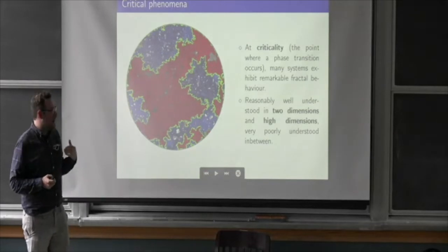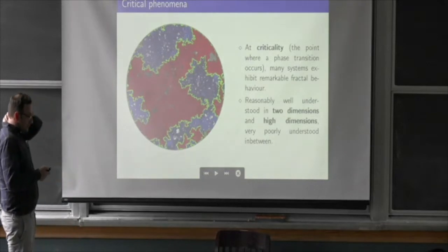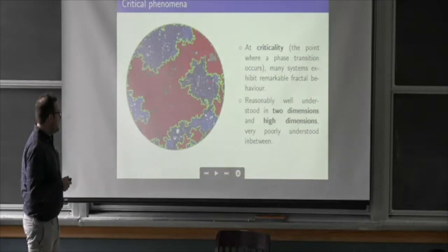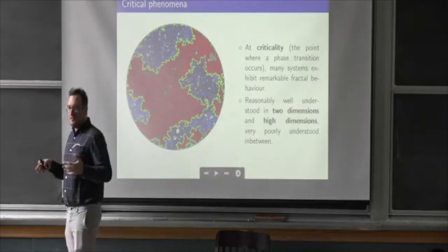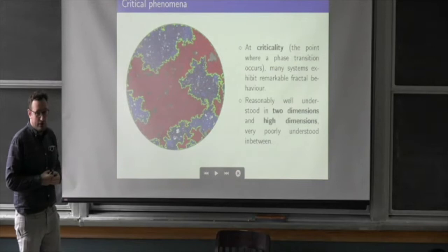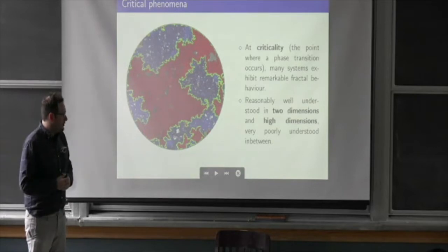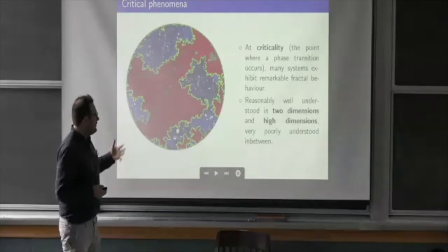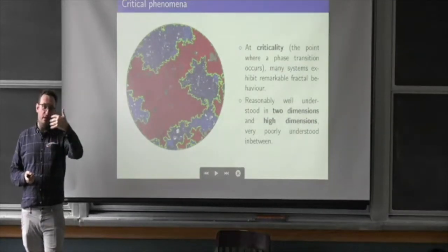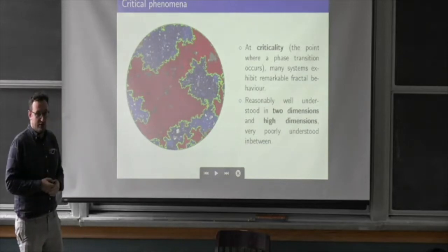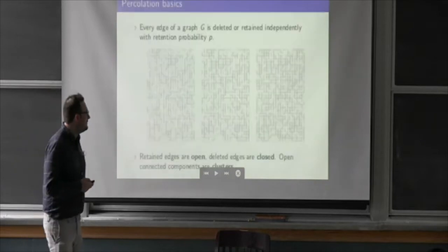One example I'll talk about in detail today is percolation. This is actually a simulation of percolation done by Jason Miller. You can see this critical percolation with all these interesting fractal boundaries between different large clusters. Generally, we understand critical phenomena pretty well in two dimensions — or more accurately, there are a small number of models we understand extremely well in two dimensions, closely related to what Ewan and Greg do. We also understand things in high dimensions. The story in intermediate dimensions, especially three dimensions, is generally very poorly understood, very much at the frontier of modern research.